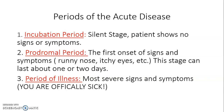The third period is the period of illness. This is the most severe period because this is where you are officially sick. No matter what you tried to do to get rid of those symptoms in the prodromal period, those symptoms did not go away and you are officially in the period of illness.